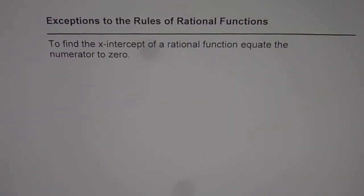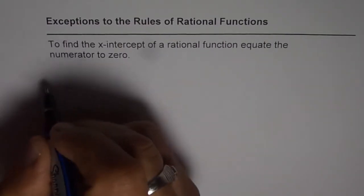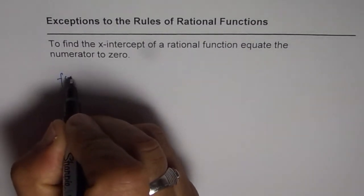I'm Anil Kumar and we are discussing exceptions to the rules of rational functions. To find the x-intercept of a rational function, equate the numerator to 0. That is what we say and most students take it as a rule, which is indeed a rule but it has to be used cautiously. Let me give you an example to make it very clear.